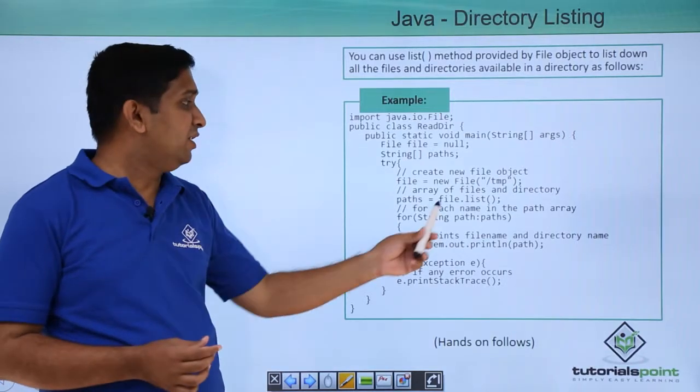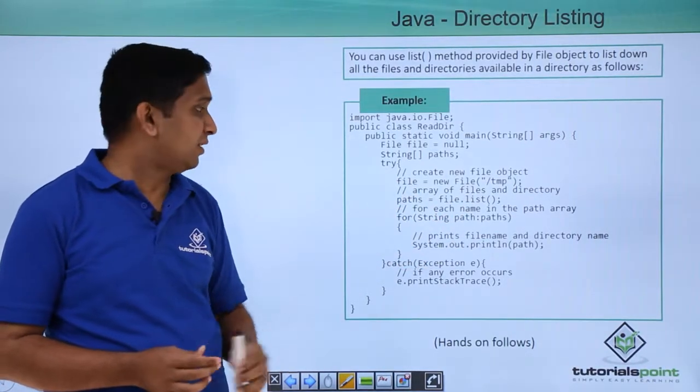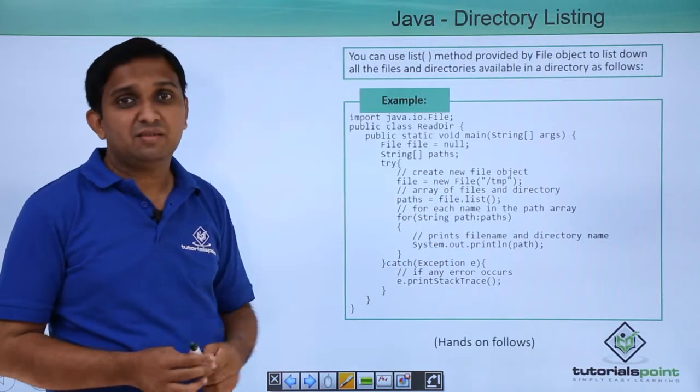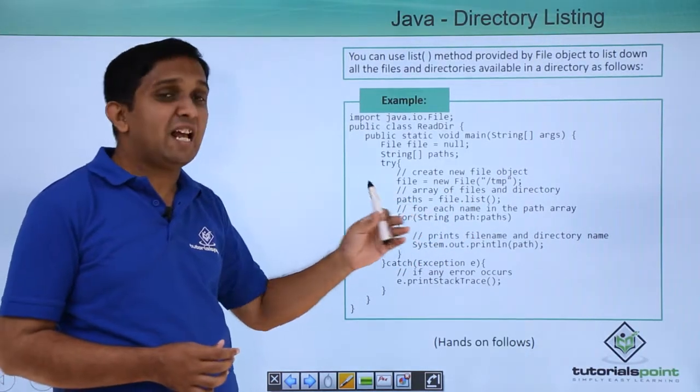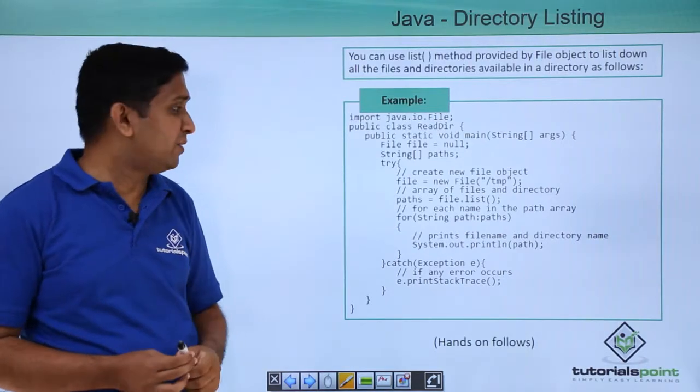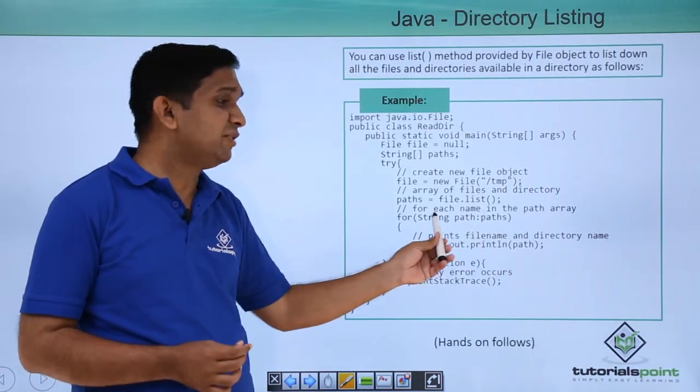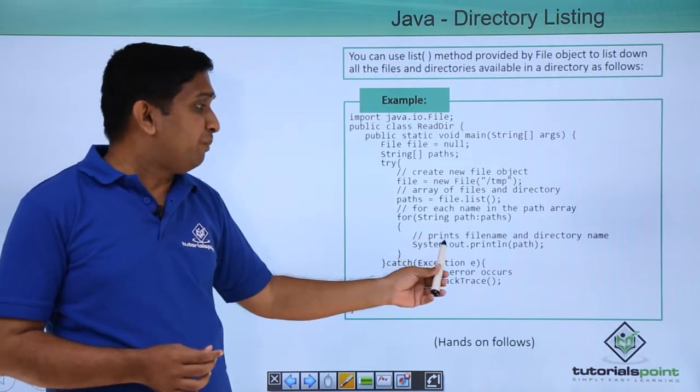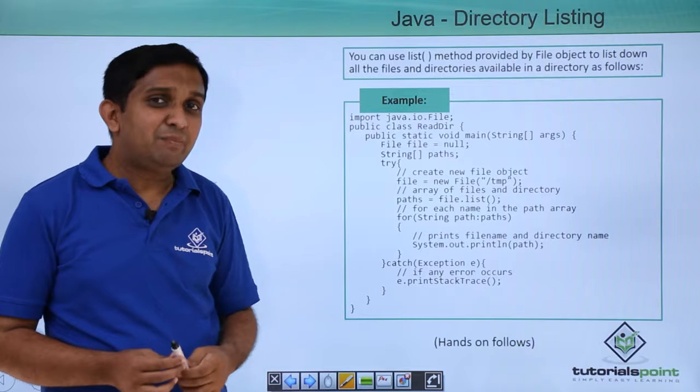Then I will call list method on this file object. Now that list will be stored in path string. So path string will have all the files and subdirectories. Now I will traverse the path string using for each loop and I will print each element of that path string.